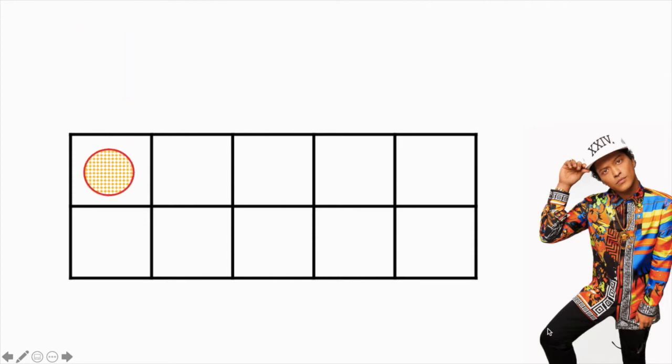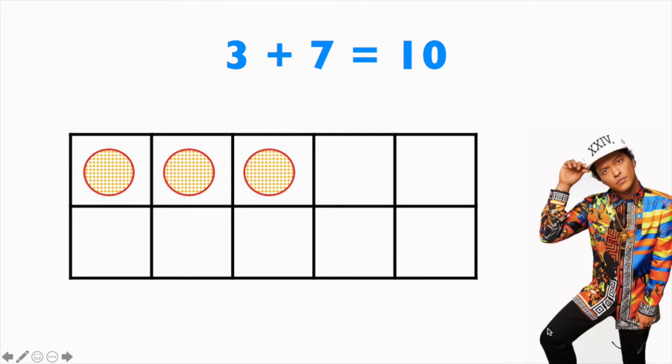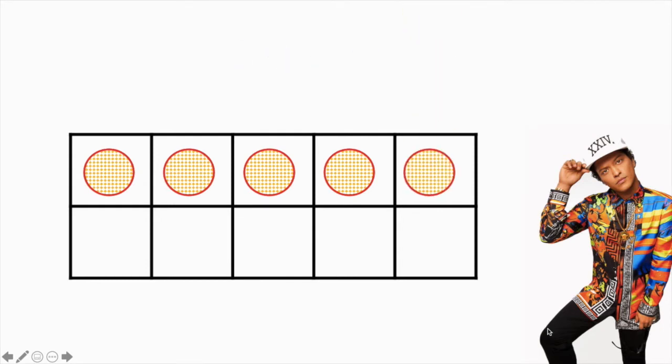So let's start by just reviewing the tens facts that we know. The first tens fact that we know is 1 plus 9 equals 10. The second fact we know is 2 plus 8 equals 10. We also know 3 plus 7 equals 10. Say this one with me. 4 plus 6 equals 10. We know this one really well. 5 plus 5 equals 10.